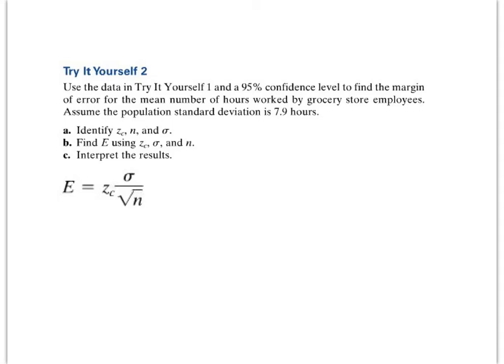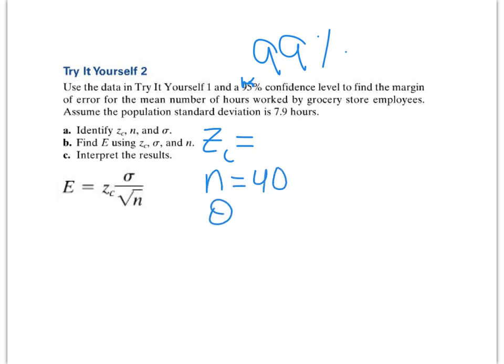Now I want you to do it. We're going to change this to 99% confidence — same problem. You want to figure out your Z-score based on the confidence level of 99% using that table. N and the standard deviation remain the same. Figure out your Z-score, plug it into the equation, solve it. Pause the video, come back, and let's see how you did.